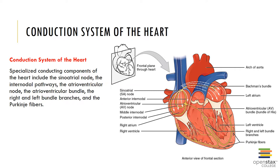The AV bundle, located within the interventricular septum, serves as the electrical connection between the atria and ventricles, leading to the right and left bundle branches, which extend toward the apex of the heart and fan out deep to the endocardial surface. The left bundle branch, serving the massive left ventricle, is larger than the right. Purkinje fibers are the final link in the distribution network, responsible for depolarization of the ventricular myocardial cells that trigger ventricular contraction.